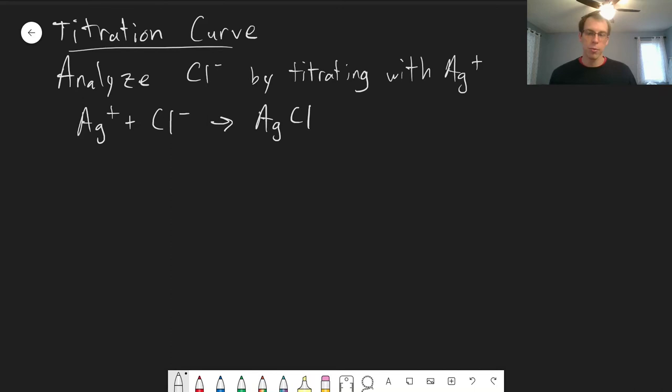In this example we'll be looking at analyzing chloride by titrating with a solution of silver ions. The reason we do this is that the silver and chloride will react and form silver chloride solid.